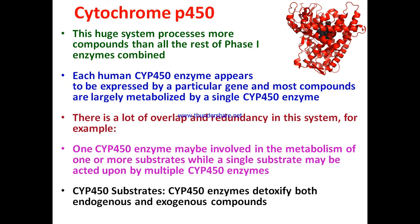The cytochrome P450 system processes more compounds than all the rest of the phase one enzymes combined. Each human CYP450 enzyme appears to be expressed by a particular gene, and most compounds — including xenobiotic compounds — are largely metabolized by a single CYP450 enzyme. There is a lot of overlap and redundancy: one CYP450 enzyme may be involved in the metabolism of multiple substrates, or a single compound may be acted upon by multiple CYP450 enzymes. CYP450 enzymes detoxify both endogenous and exogenous compounds.